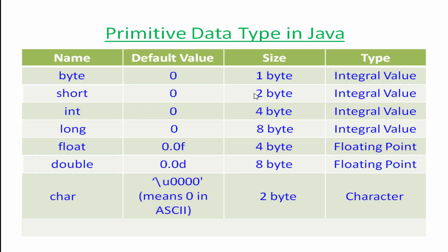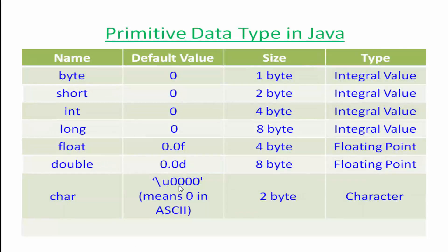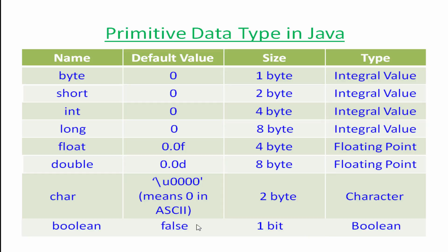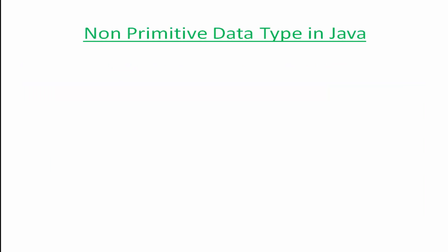The next data type is char. Its default value is a Unicode value which in ASCII means 0, and the memory allocation size is 2 bytes. The last primitive data type is boolean. Its default value is false, it has one bit, and this bit will be either true or false — so by default the value is false, but we can also store true in it.